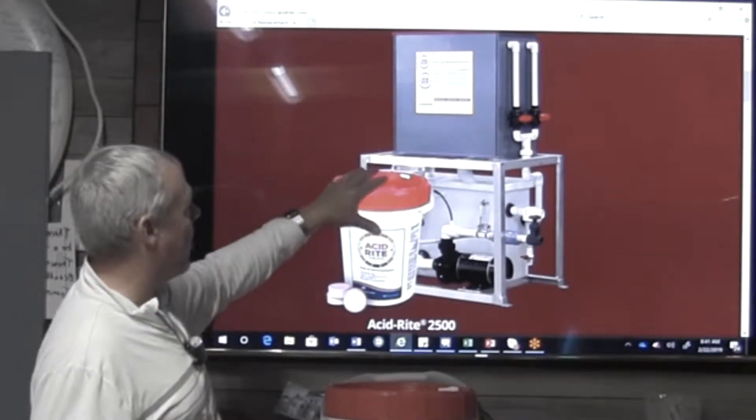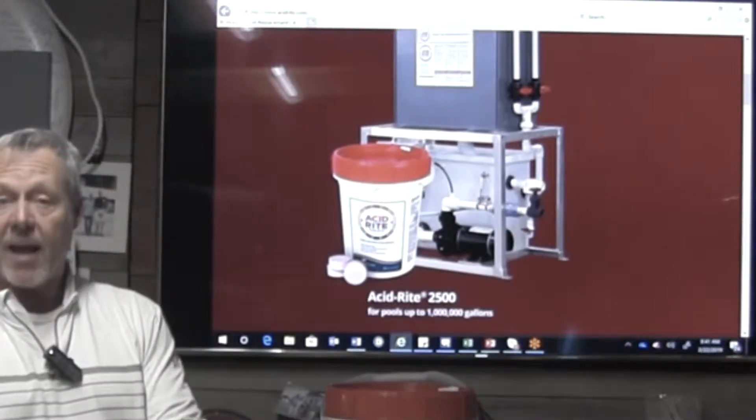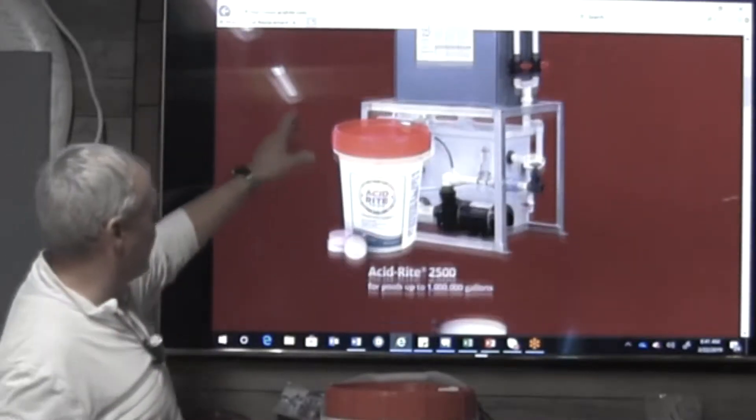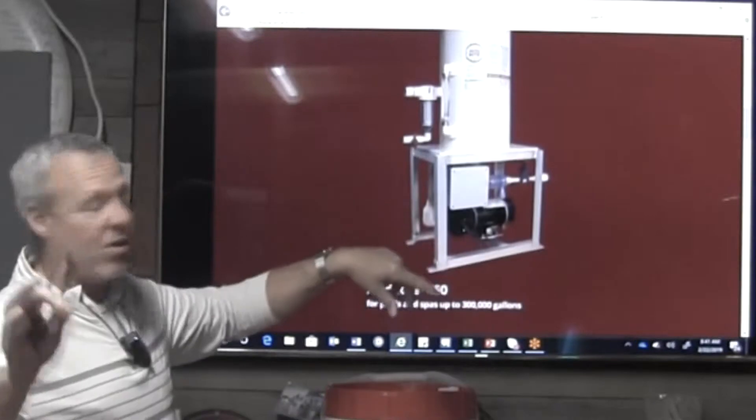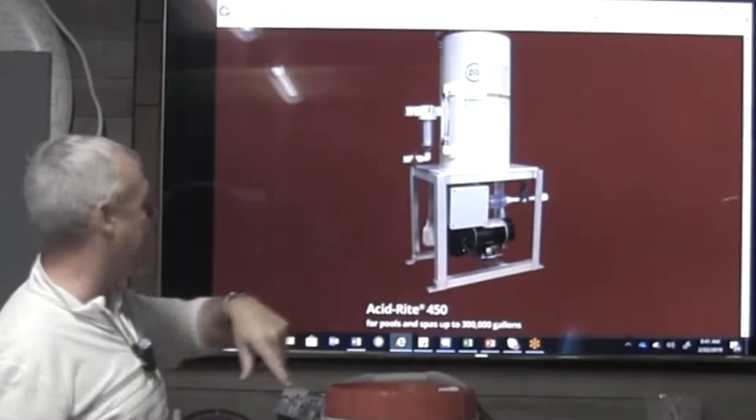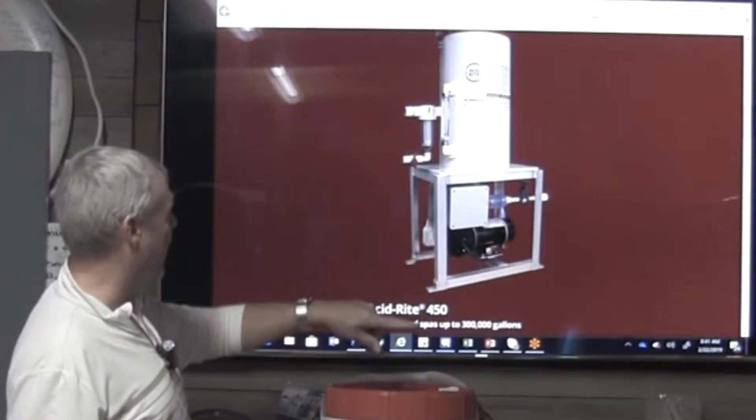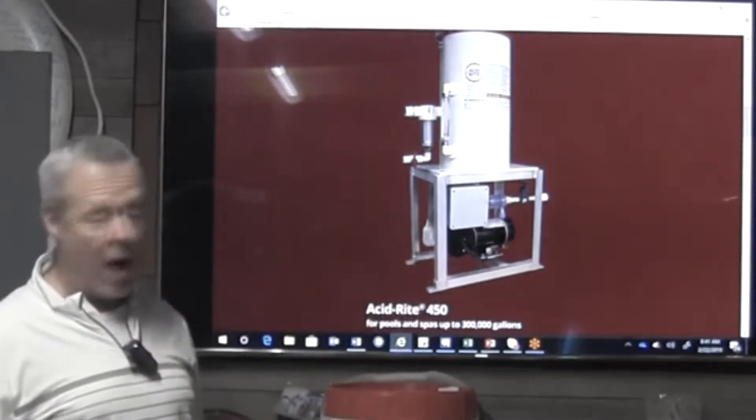This feeder right here is their 2500 for pools up to a million gallons. And they have another feeder, if we scroll down a little bit, you can get to their website at acidrite.com, is their 450 which does up to 300,000 gallons of water.